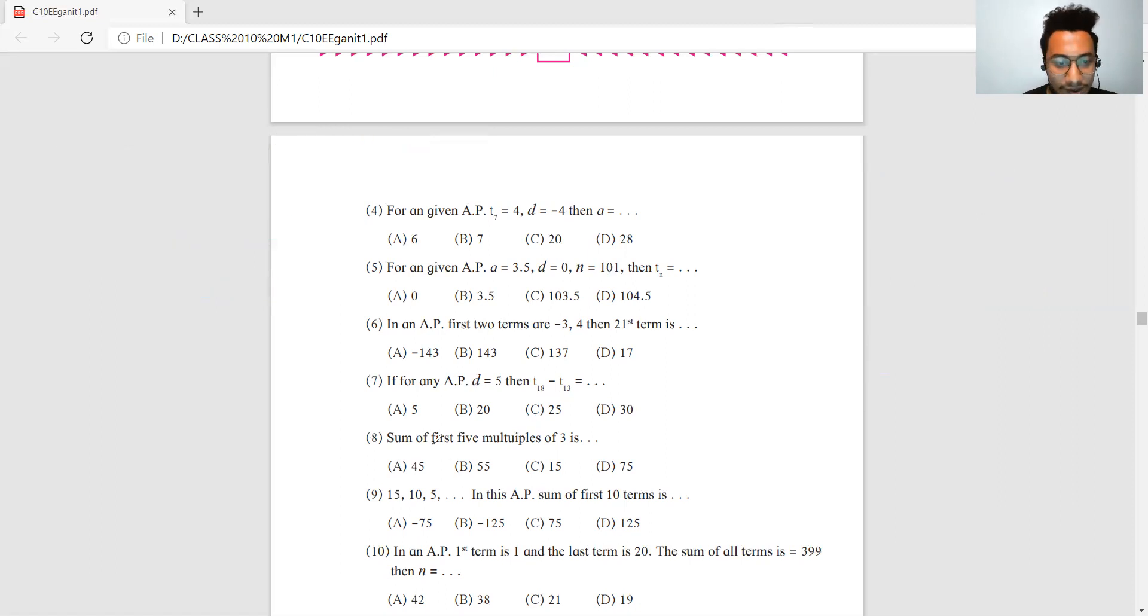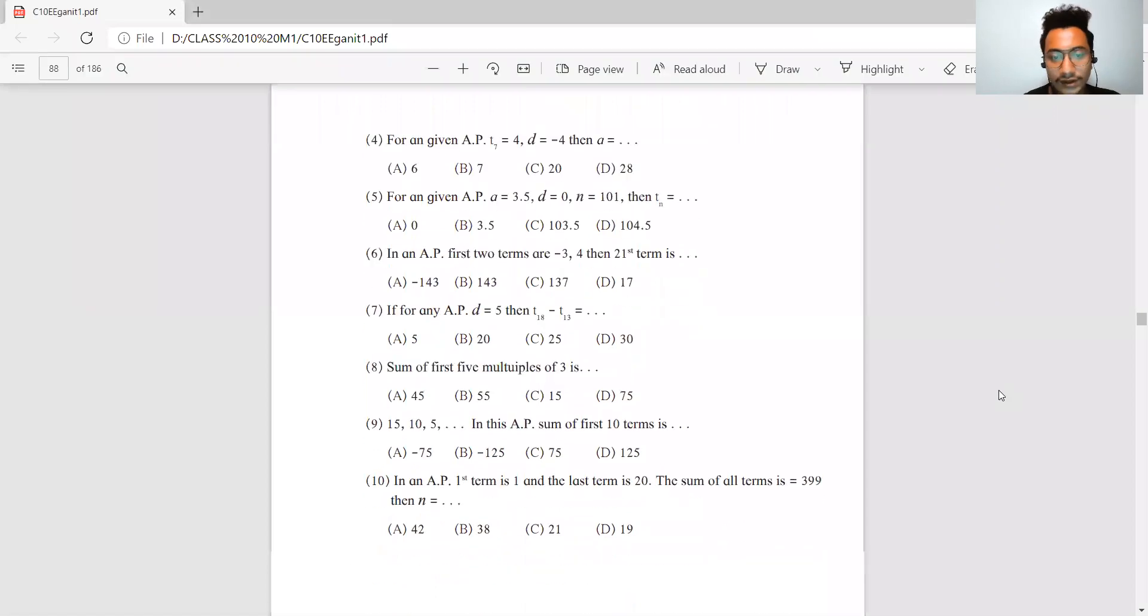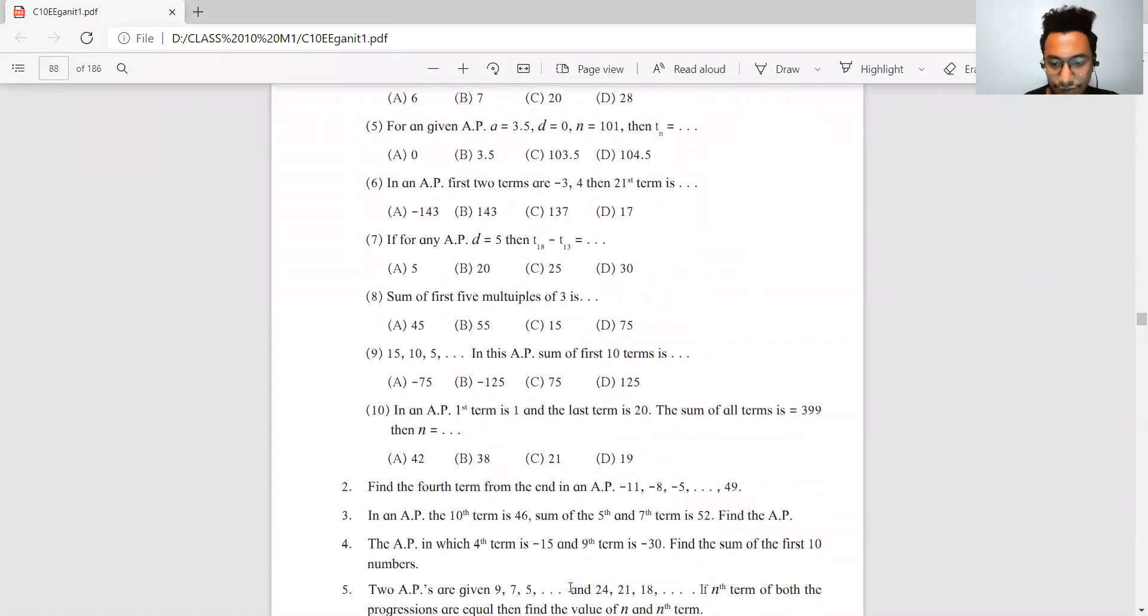Question number 8: Sum of first 5 multiples of 3. So the first 5 multiples of 3 are 3, 6, 9, 12, and 15. You need to find the sum. You can directly add them: 15 and 15 is 30, 18 and 12 is 30, so 30 plus 30 plus 9 is 45. Or you can directly apply the Sn formula to find the answer.